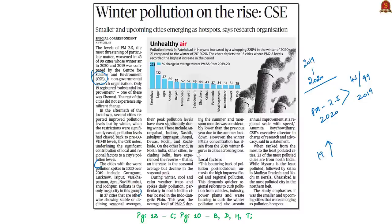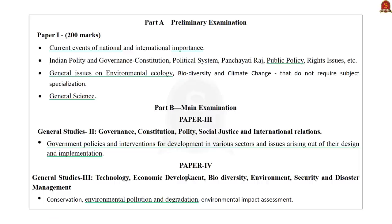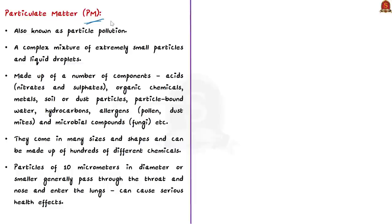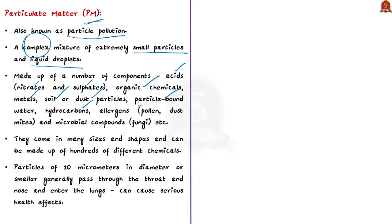In this context, let us understand particulate matter. Particulate matter, also known as particle pollution, is a complex mixture of extremely small particles and liquid droplets made up of components including acids like nitrates and sulfates, organic chemicals, metals, soil or dust particles, particle-bound water, hydrocarbons, etc. Biological components such as allergens including pollen, dust mites, and microbial compounds like fungi are also part of particulate matter.